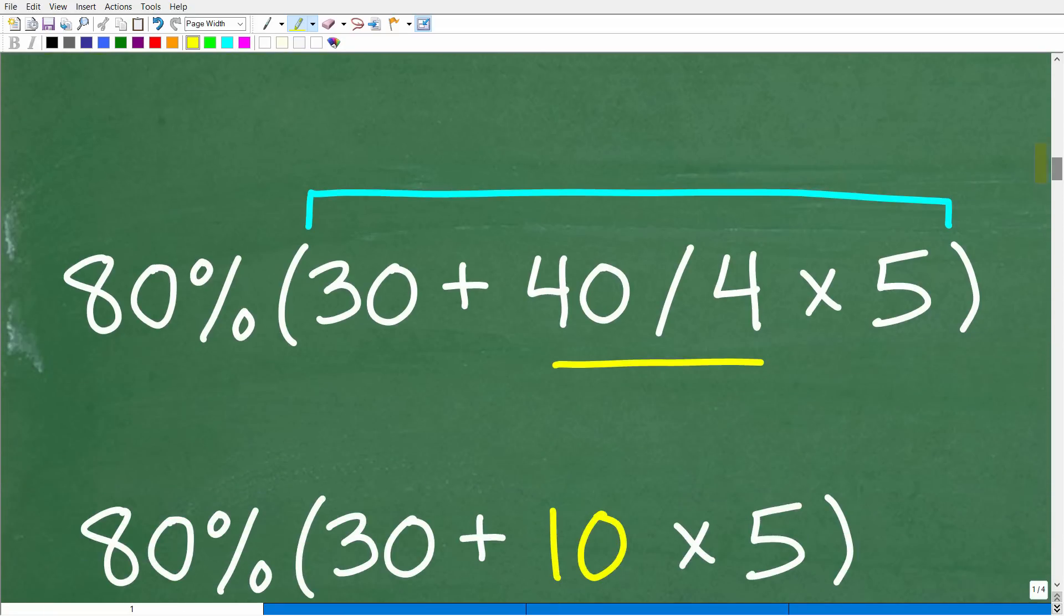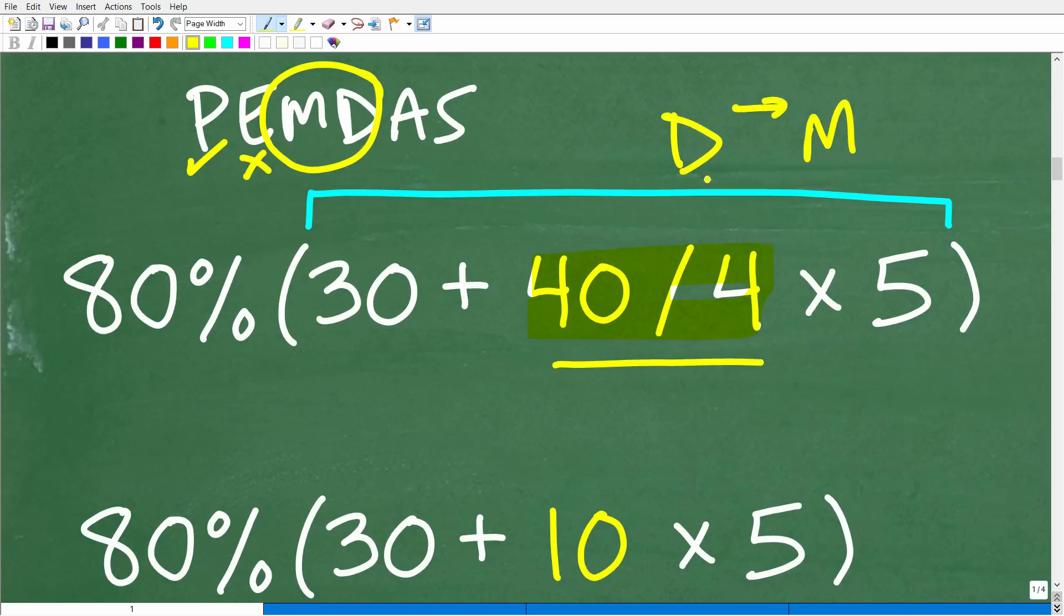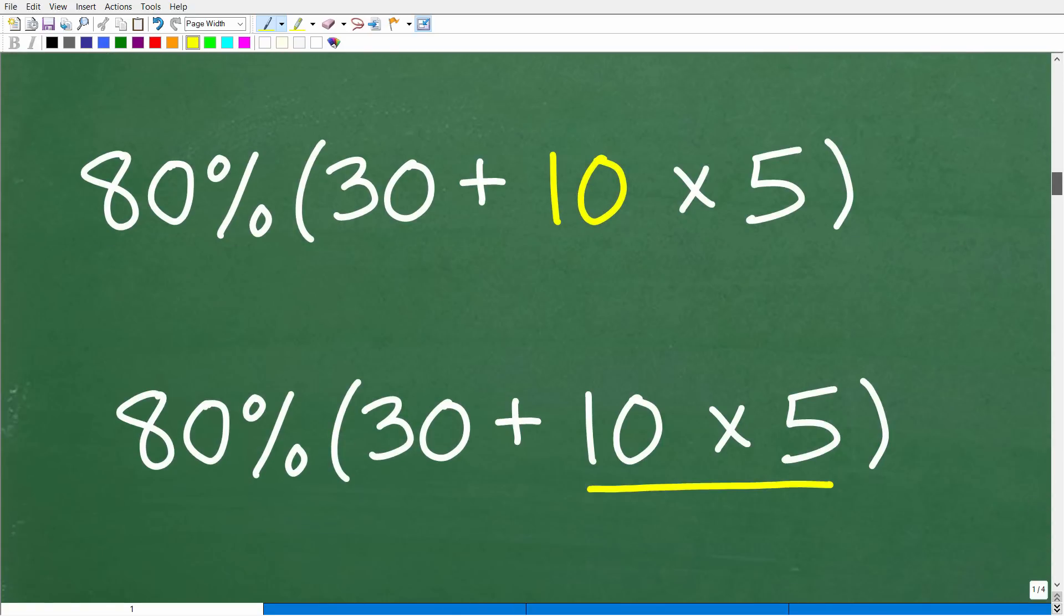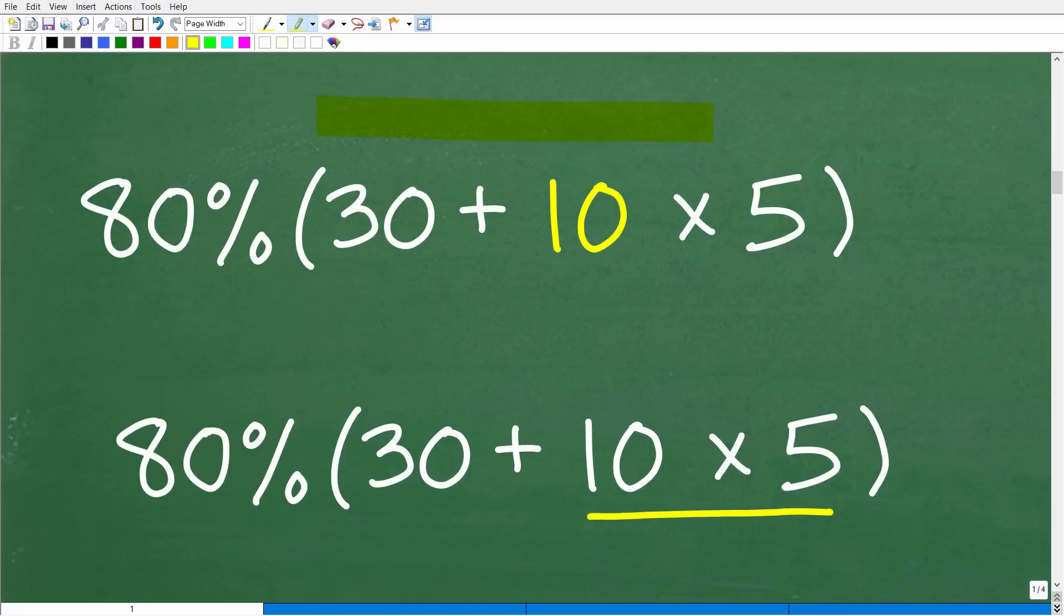We're going to take care of this big math problem inside of the parentheses, get that down to one number. Once we're done with that, then we'll deal with 80% of that value. As promised, this is where we need to start first with division. PEMDAS. We're thinking about parentheses. There's no powers, so we don't have to worry about exponents. But we do have multiplication and division. What do I see first from left to right? Here is division, this is multiplication. I see division first from left to right. So this is what I got to do first. 40 divided by 4, pretty easy stuff. That would be 10. I'm still working inside of the parentheses.